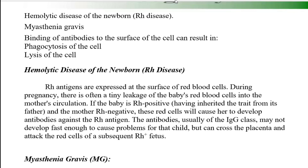When antibodies bind to the cell surface, two processes can occur: phagocytosis or lysis. In lysis, the red blood cells are broken down; in phagocytosis, they are engulfed. Both processes result in the breakdown of the baby's red blood cells. This is how hemolytic disease of the newborn develops during pregnancy — the baby's red blood cells undergo breakdown, leading to RH disease.